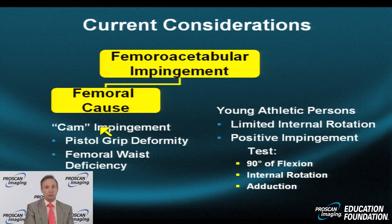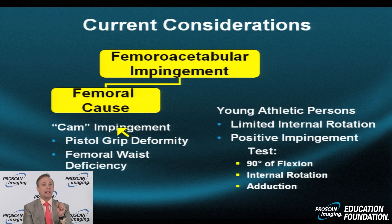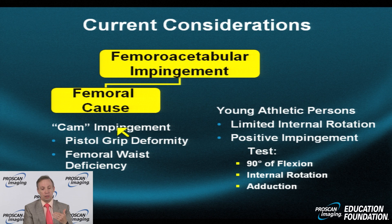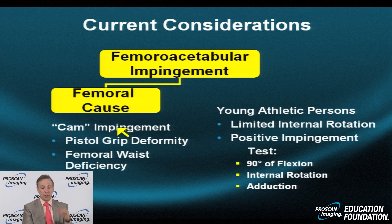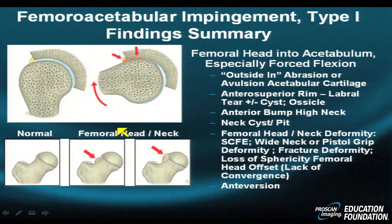Drilling into the femoral causes associated with cam type impingement, there is a subgroup more likely to be affected: usually younger, athletic individuals who flex their leg with internal rotation. They may have positive impingement or FAI signs on physical examination, and often do not feel comfortable bringing the knee up towards the chin, internally rotating the leg, adducting the leg, or crossing one leg in front of the other.